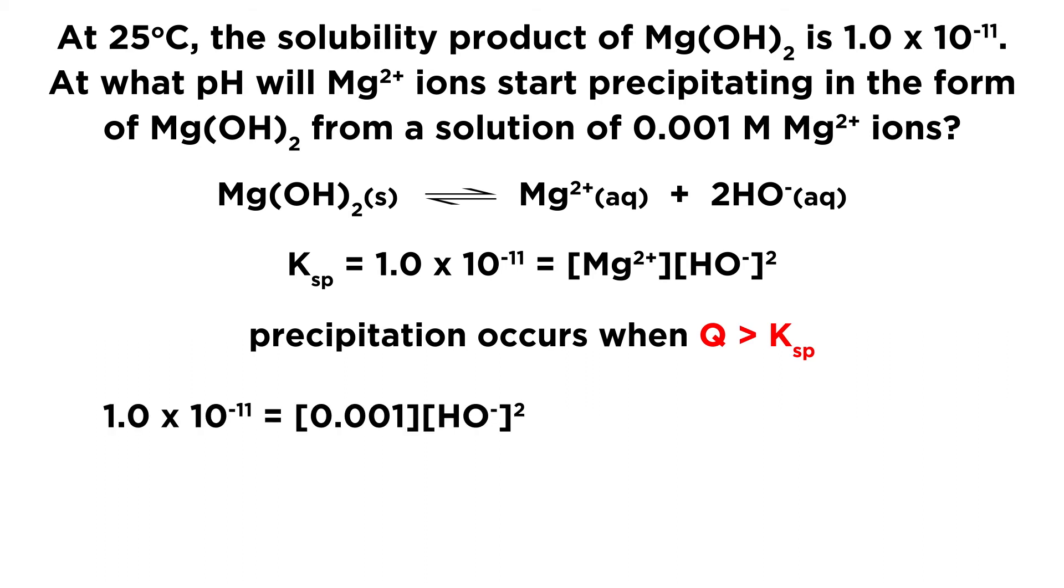So let's plug in what we know. We have Ksp. We have the magnesium ion concentration in solution. We know that we're 0.001 molar in magnesium ions, so let's plug that in as well. The only thing we don't know is the hydroxide ion concentration, and we will need to solve that in order to say something about pH. So let's solve for the hydroxide ion concentration. We just divide both sides by 0.001, and then take the square root, and we get 1.0 times 10 to the negative 4. So that is the hydroxide ion concentration that will be required in order to promote precipitation.